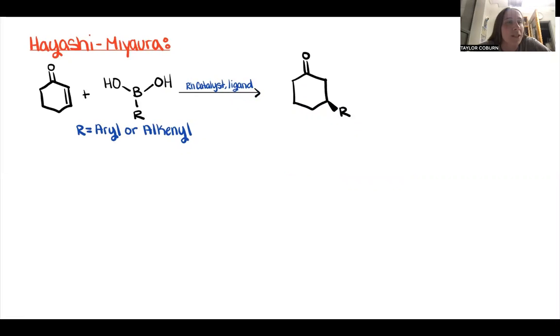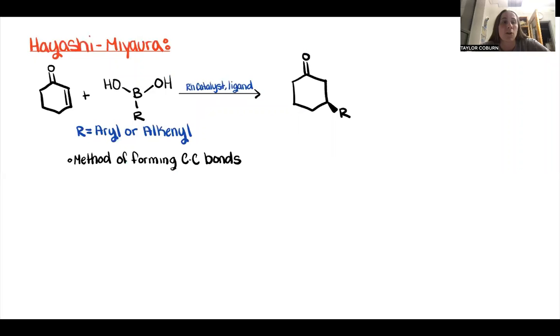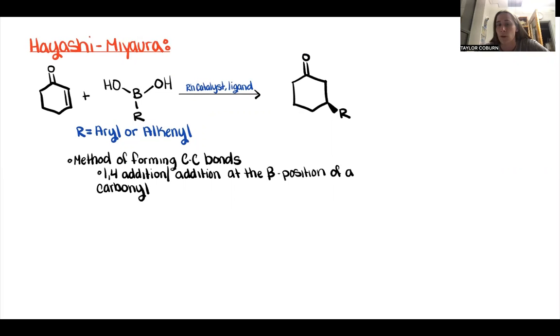So starting off with the Hayashi-Miyaura reaction, this is just a way of forming carbon-carbon bonds through the use of a rhodium catalyst and a boronic acid derivative. It's important to note that the R-group in the boronic acid is either an aryl or alkenyl compound, and this reaction is simply just a 1,4 addition or an addition at the beta position of a carbonyl.